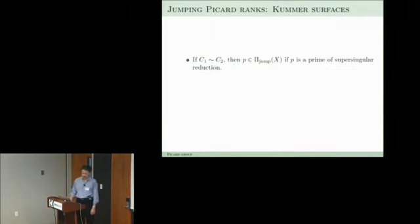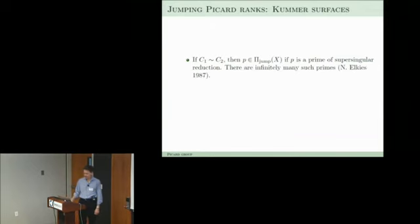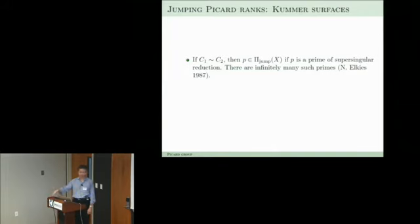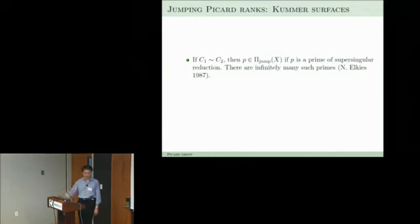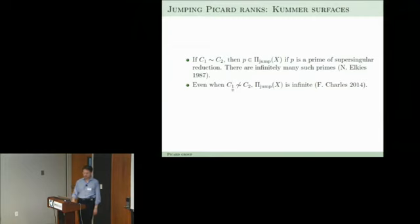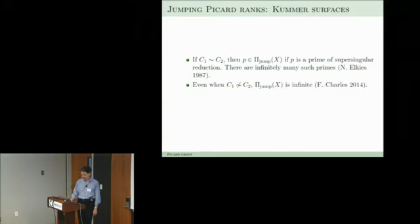How often does supersingular reduction happen? Noam Elkies proved in 1987 that there are infinitely many primes where you acquire supersingular reduction — the original paper was over Q; it's not known in general for other number fields, but this is a good sign that we get infinitely many jumping primes. A recent result of François Charles is that even when the curves are not isogenous to elliptic curves, the set of jumping primes is still infinite — a beautiful theorem combining distribution results.